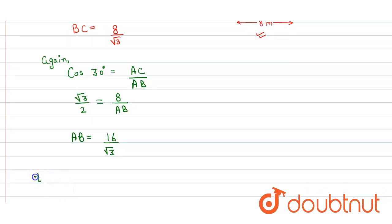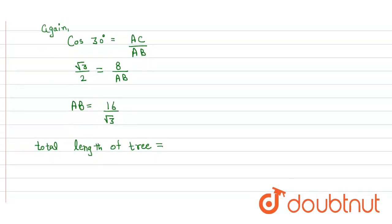So the total length of the tree is equal to BC plus AB.